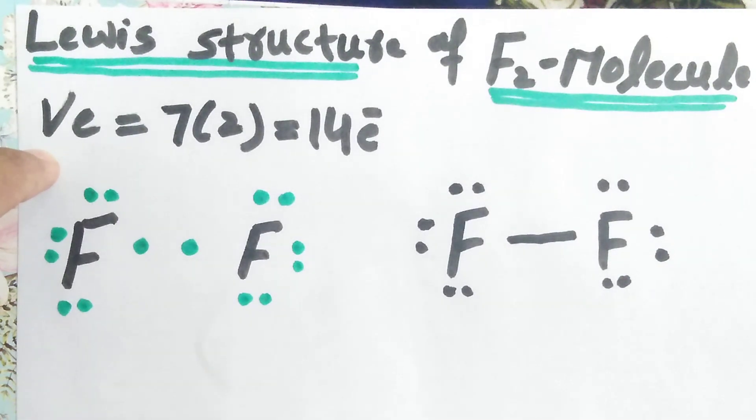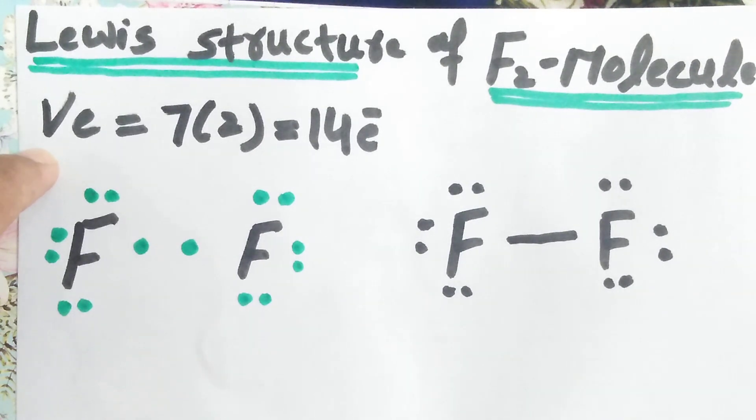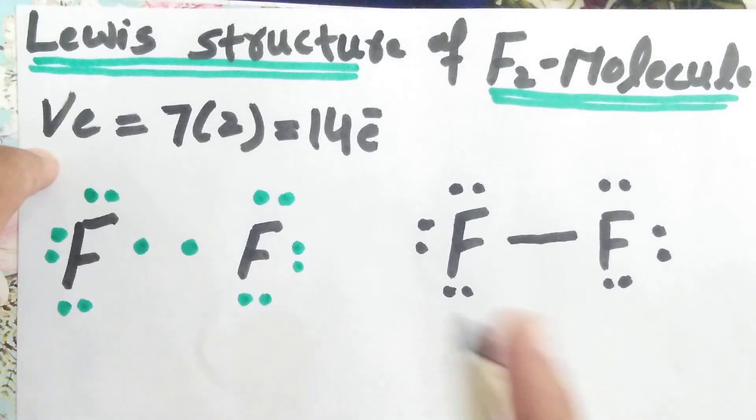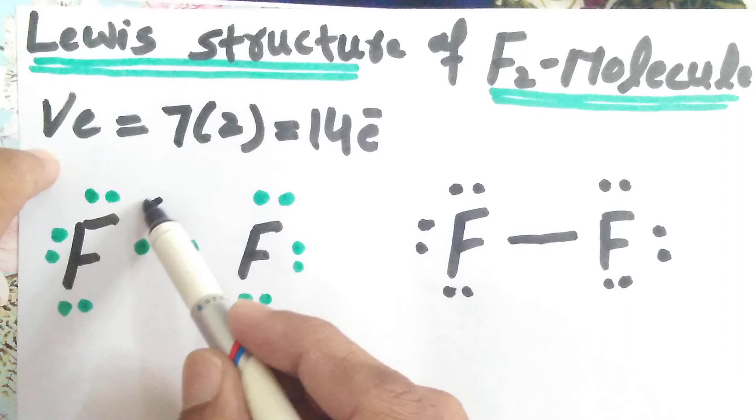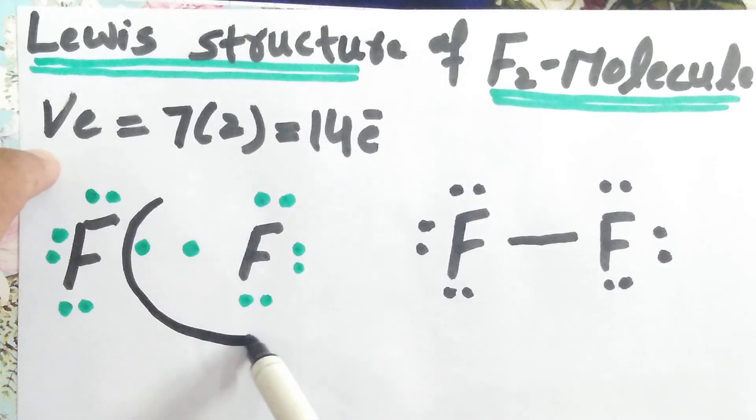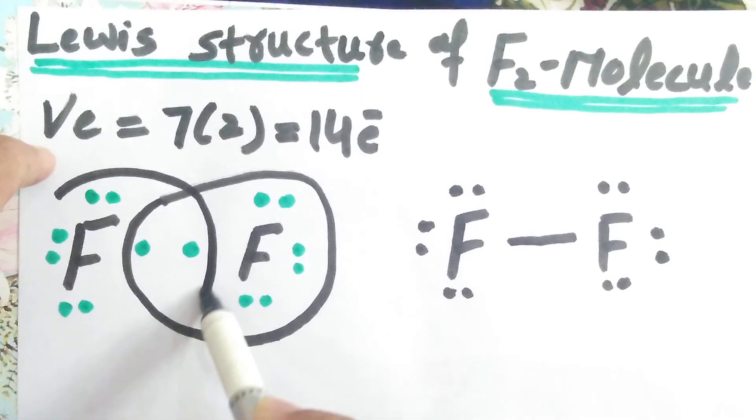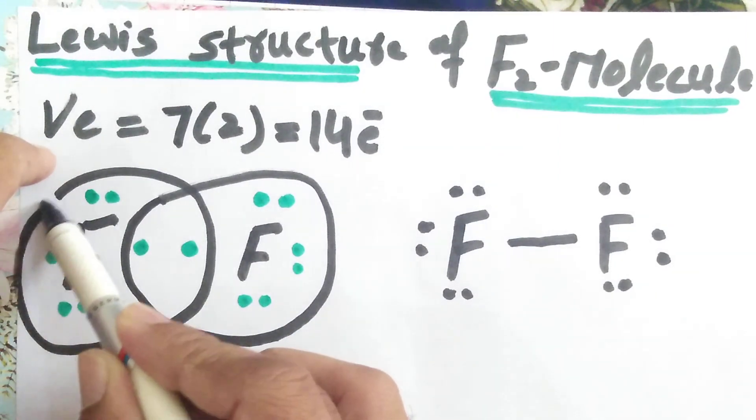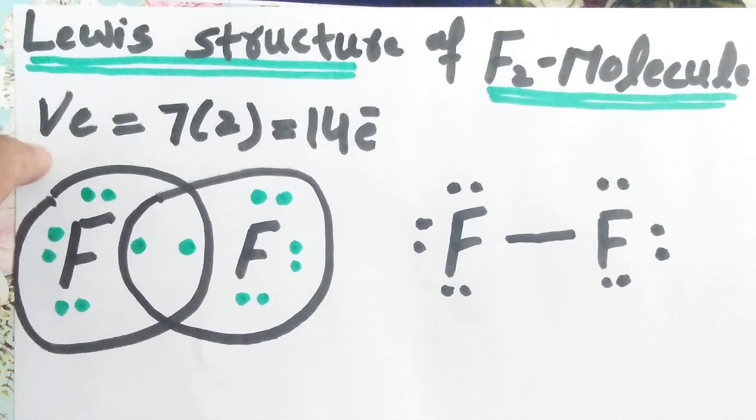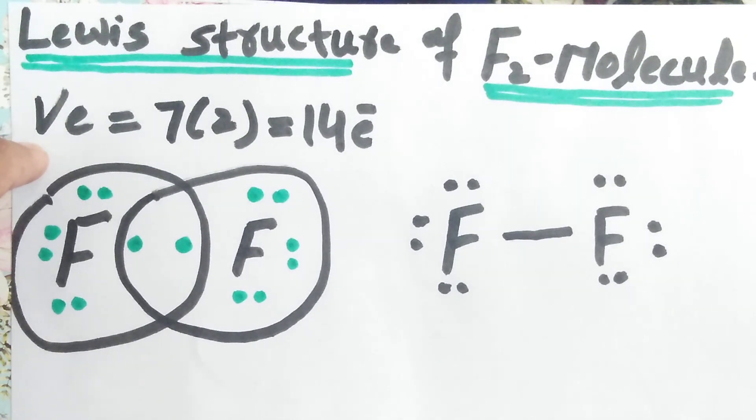So other than this, remaining electrons remain as a lone pair on the two fluorine atoms. Now we have to justify the octet rule. We know that 2, 4, 6, 8 and for this also 2, 4, 6, 8. Now we calculate the formal charge.